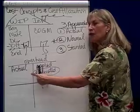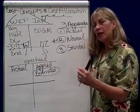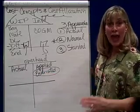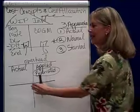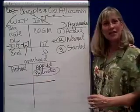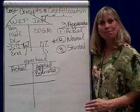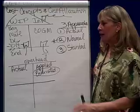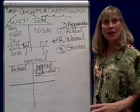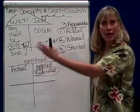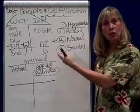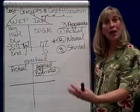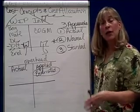When you incur the actual costs of overhead, they show up on the debit side of the overhead account. So at the end of the period, you've got this overhead account where debits are your actual costs and credits are what you applied or estimated overhead to be.